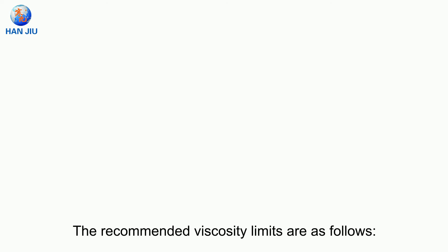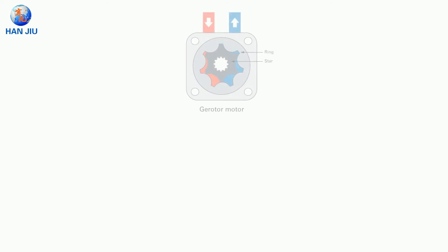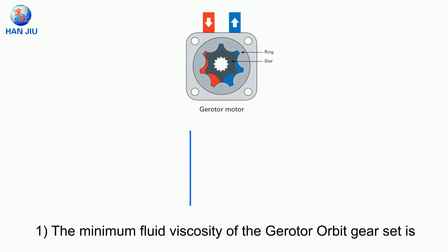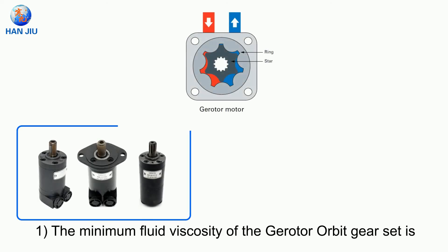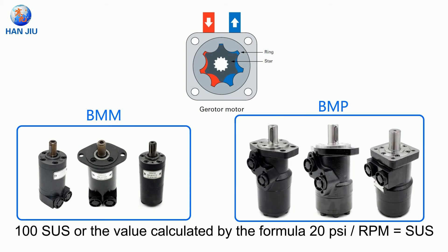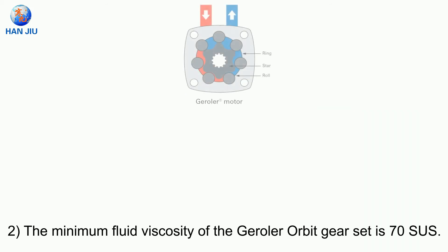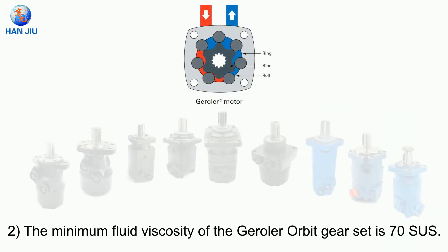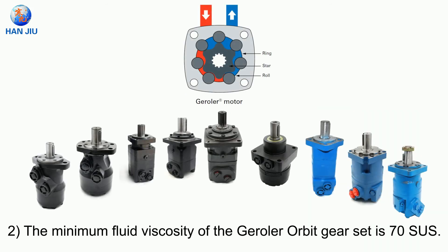The recommended viscosity limits are as follows. First, the minimum fluid viscosity of the gerotor orbit gear set is 100 SUS, or the value calculated by the formula 20 × PSI ÷ RPM = SUS. Second, the minimum fluid viscosity of the geroller orbit gear set is 70 SUS.